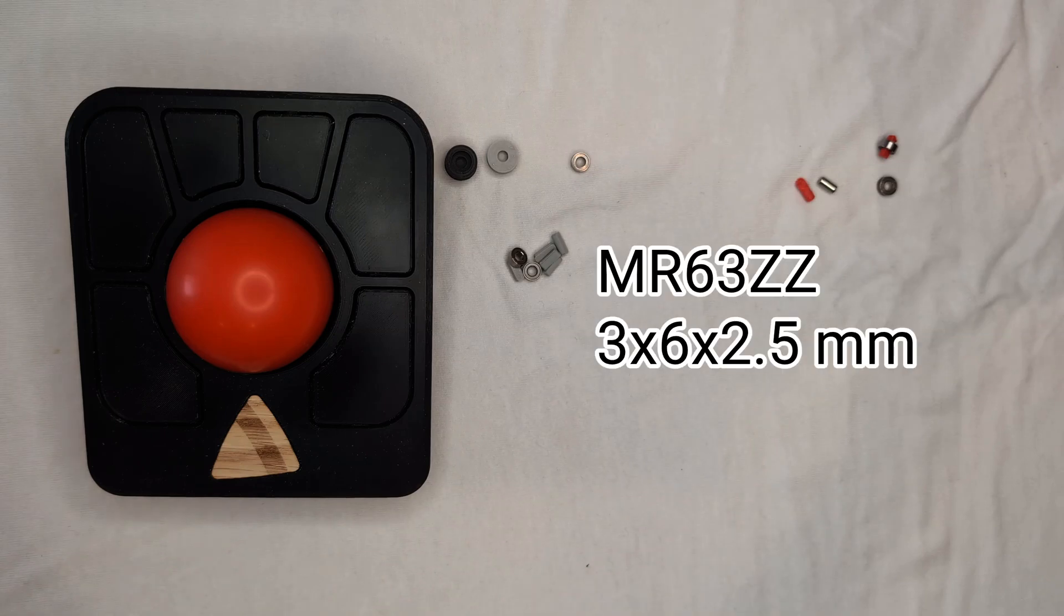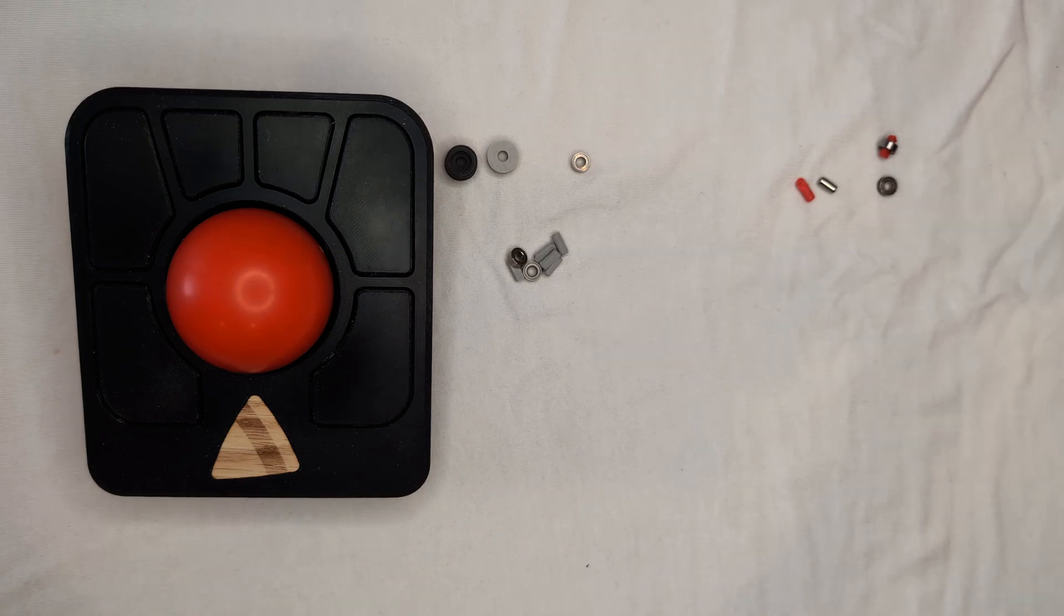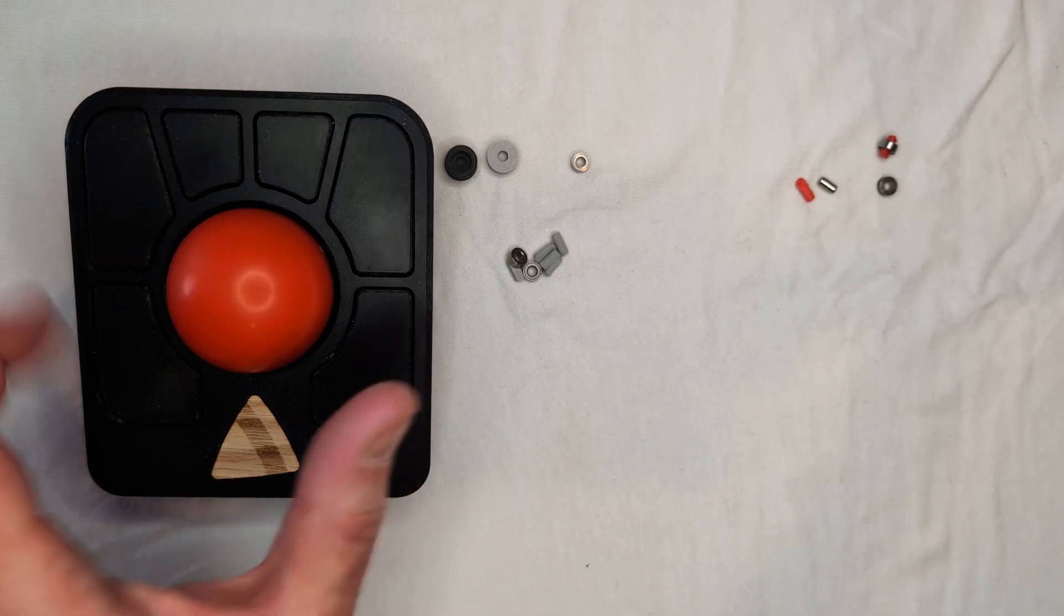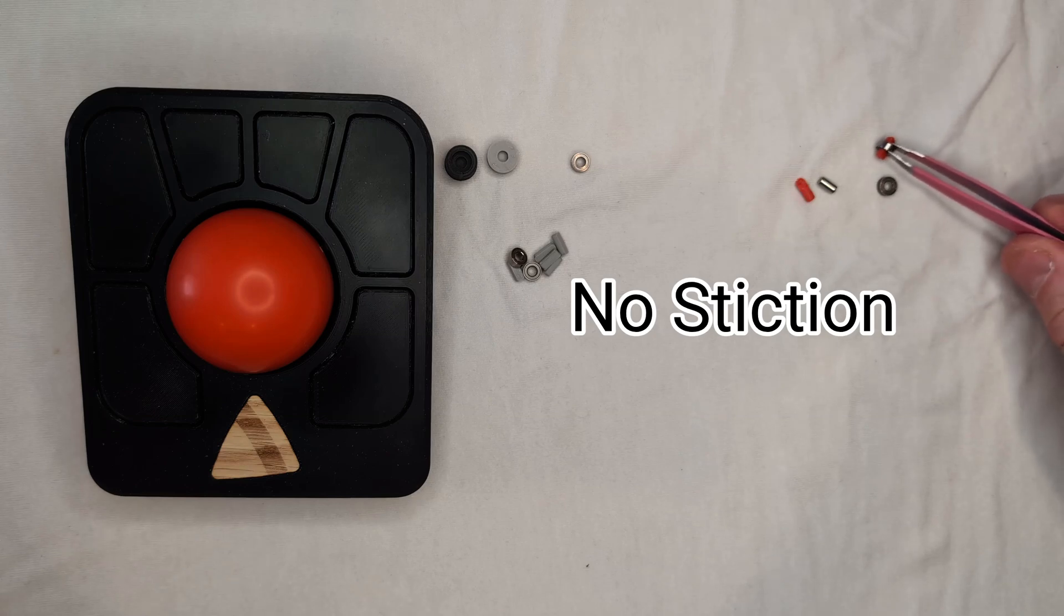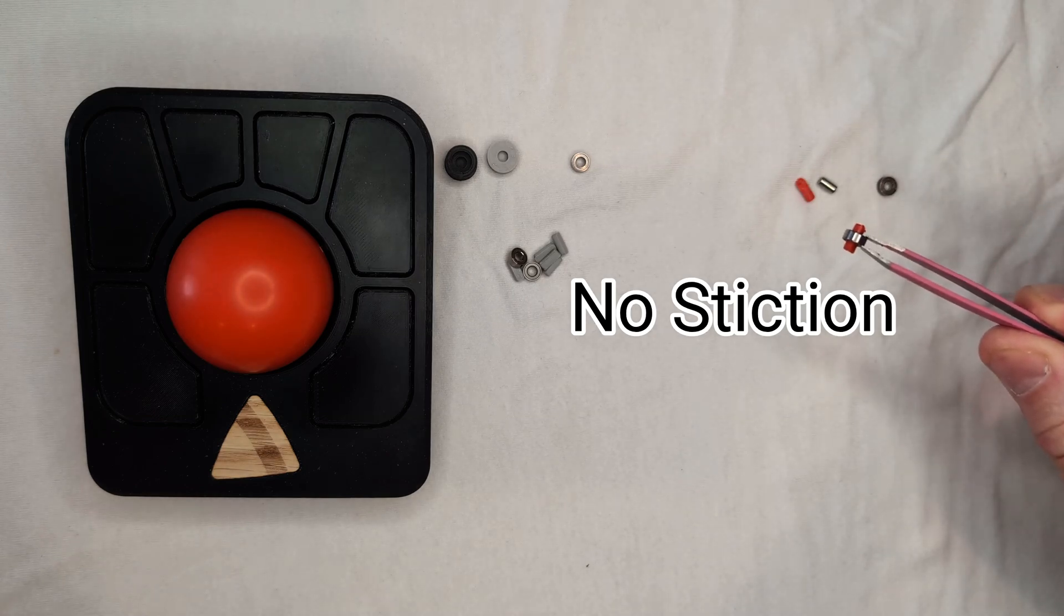That bearing is MR63ZZ steel roller bearings. And the main selling point of Ploopy devices is the high quality of the device itself, the key switches, the high polling rate of the sensor, and the lack of stiction on the ball as a consequence of these dynamic roller bearings.